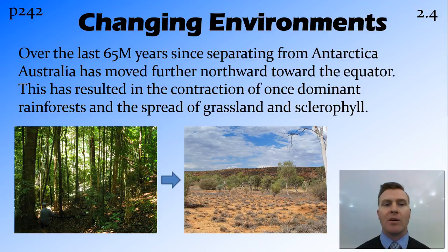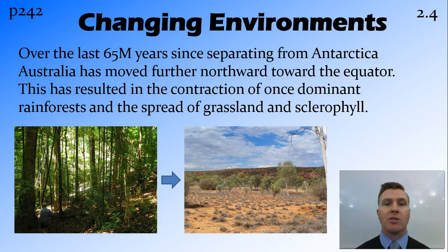So firstly the environment and how it changed. Basically what happened is about 65 million years ago Australia split from Antarctica, which was the last split away from that supercontinent of Gondwana, and since then it's been moving northwards towards the equator. As it moved northwards it became hotter and drier, both because it's closer to the equator and because of a small ice age that occurred in that time too.